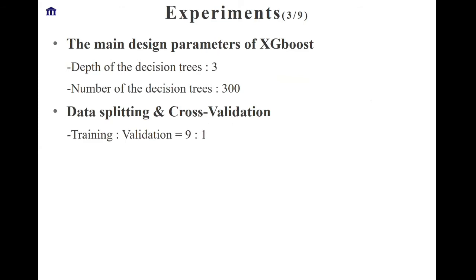There are several tunable parameters for the classifier. The depth of the decision tree is 3, and the number of decision trees is 300. We use a probability-based data module to divide the data into two distinct sets: one set contains nine out of ten data samples, which is used to train the model, and the other set uses the remaining data to validate the model.